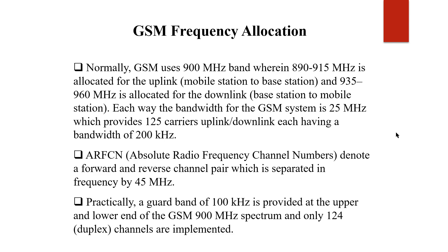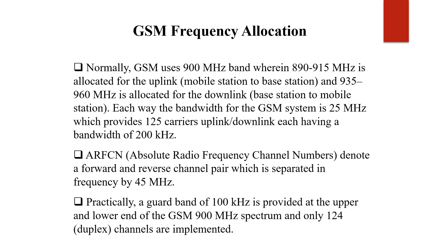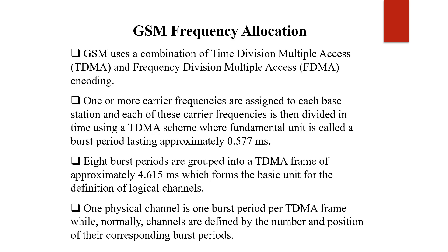Now let's look at how this frequency is allocated to each channel. Two techniques are used: Frequency Division Multiple Access and Time Division Multiple Access. This gives better functionality over the network because a single frequency is divided into a number of channels, each usable over a specific time period.